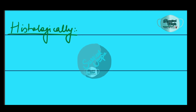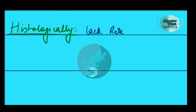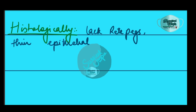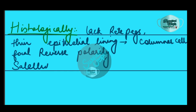Histologically, as observed under the microscope, OKC will resemble keratinized squamous epithelium. There will be a lack of rete ridges and often an artifactual separation from the basement membrane. The epithelial lining is thin with even thickness, parakeratinized, with columnar cells in the basal layer that have focal reverse polarization.